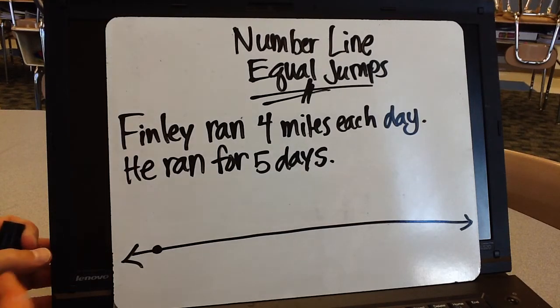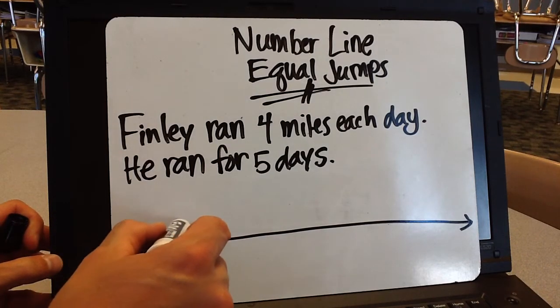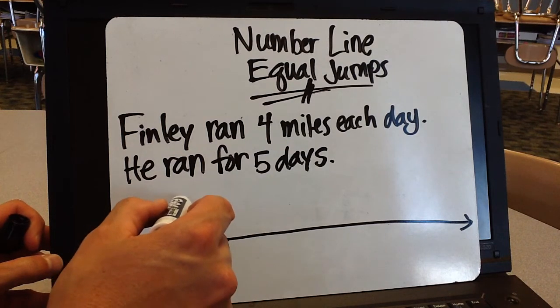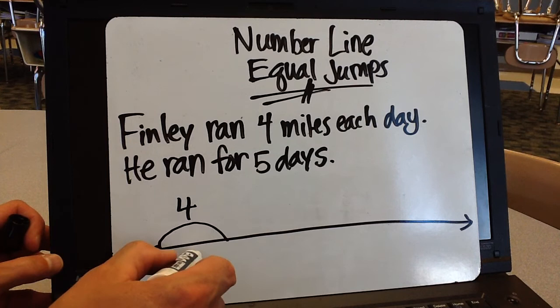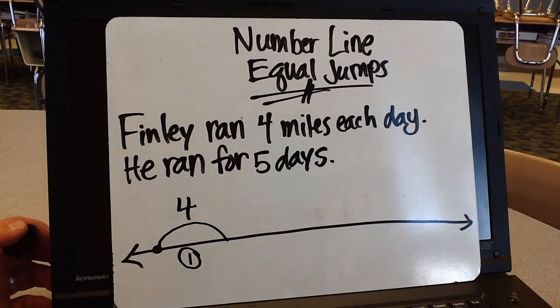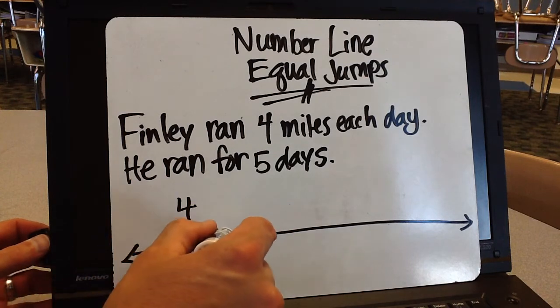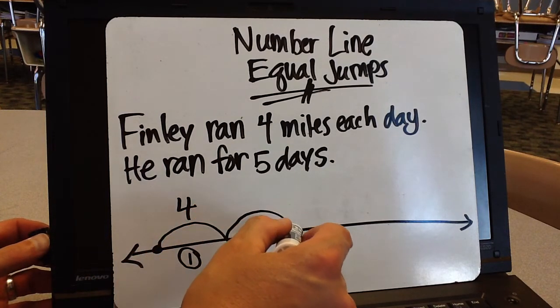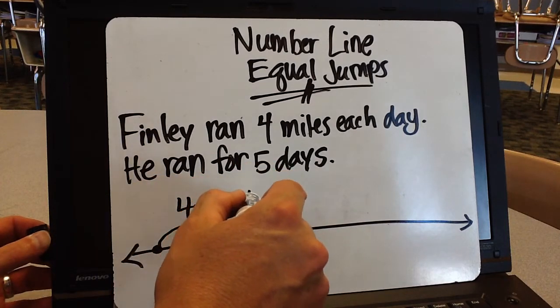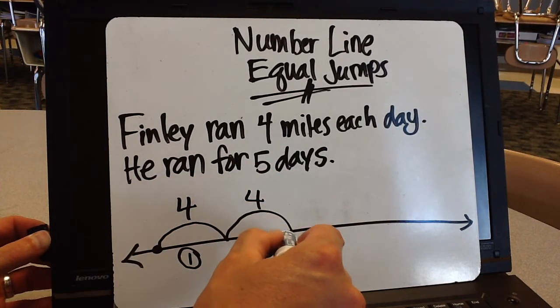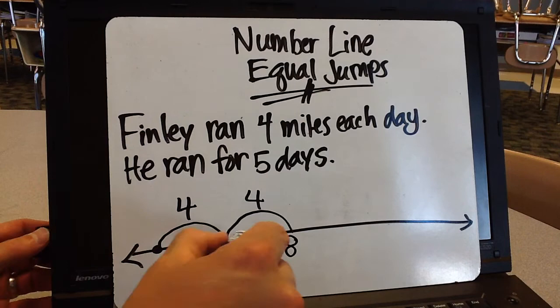So what that means is that Finley will run four miles for day one, and then I tell my students to put the day down here so they don't lose track. And then he's going to run another four miles, and that will get him to eight, and that's day two.